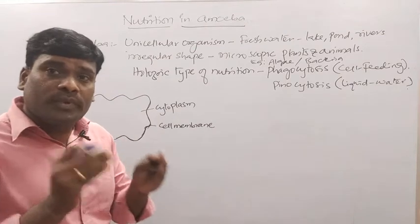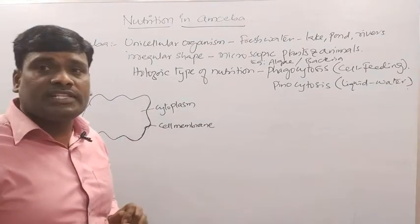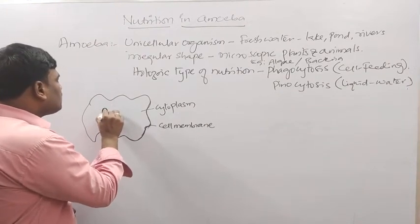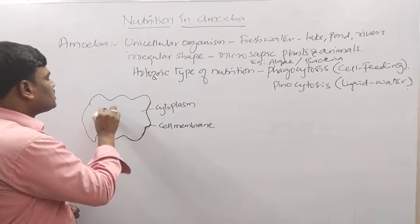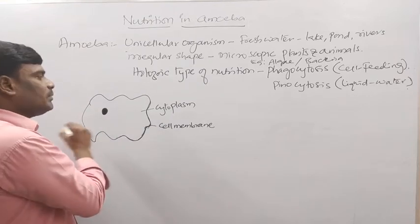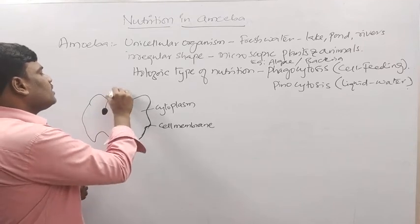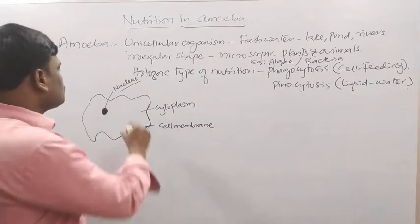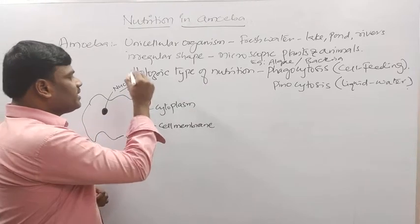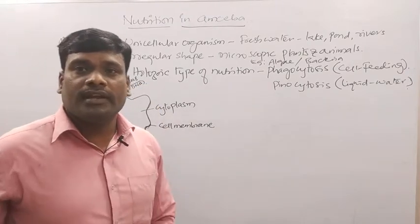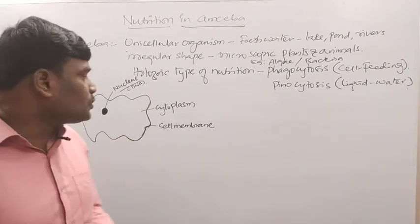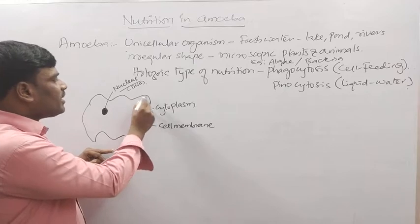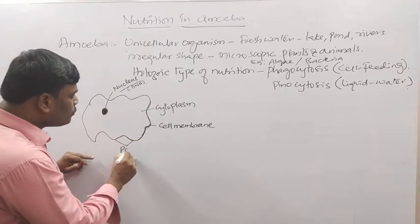In amoeba, the liquid part of the cell is the cytoplasm and the solid part is the nucleus. Inside the nucleus, it consists of DNA. Now, finger-like temporary projections are seen on amoeba, and these projections are called pseudopodia.